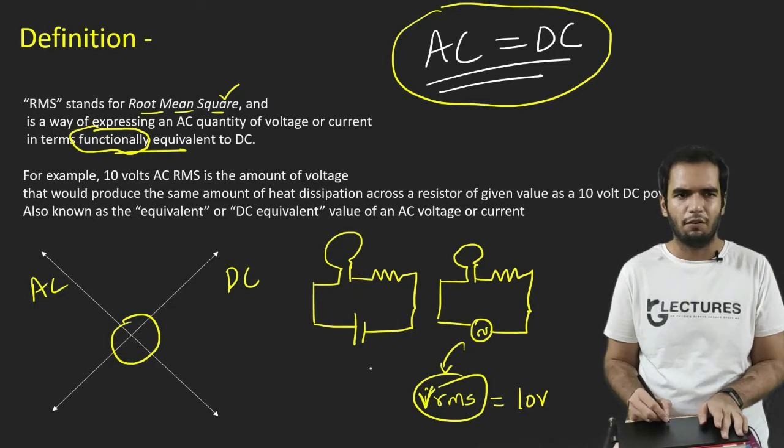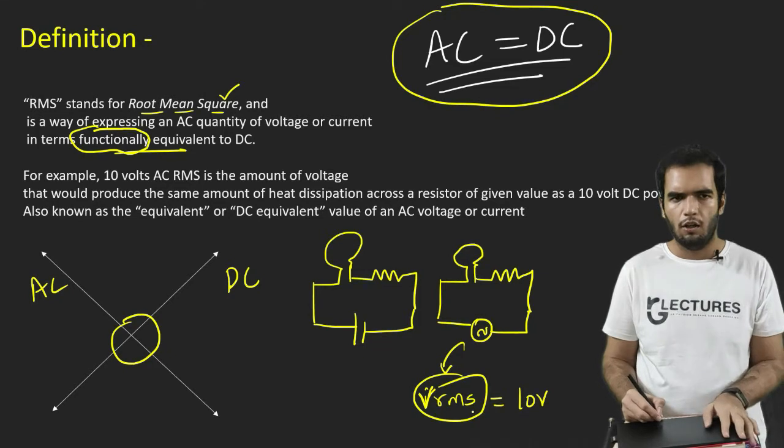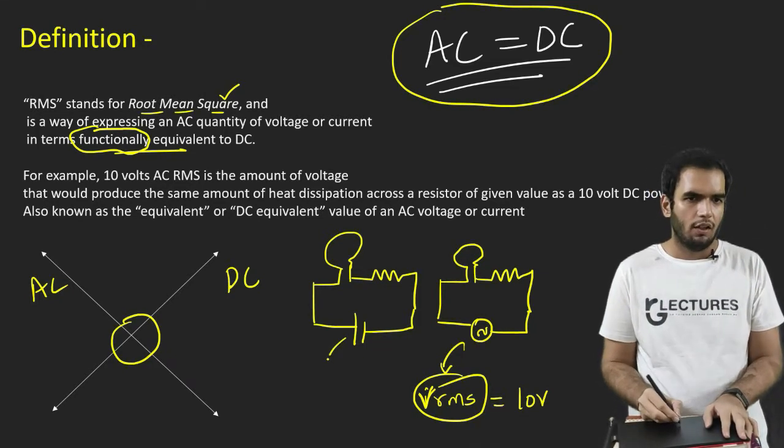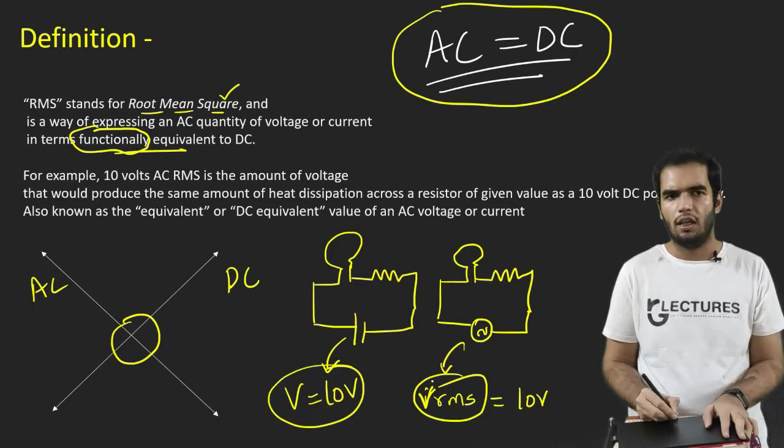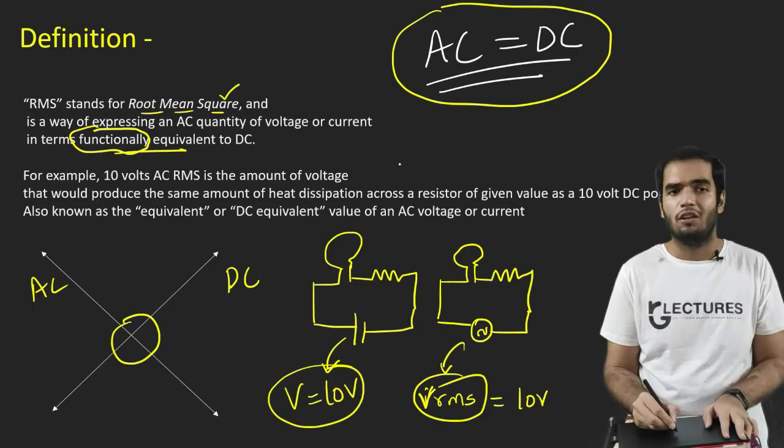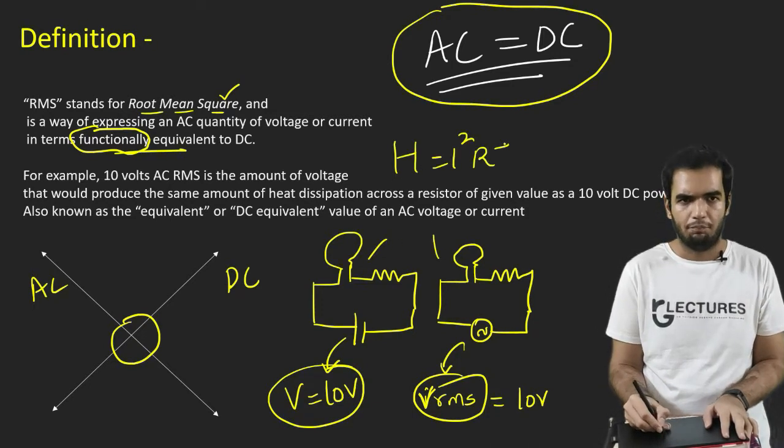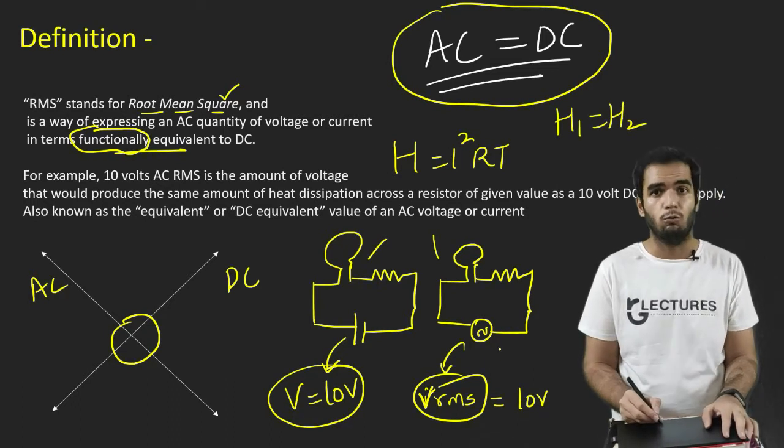So if I pass the I_RMS current through this circuit, I consider a value, I pass that I_RMS current through this circuit. Suppose that I_RMS current is say 10 volt and I_RMS current is 10 ampere. So let me consider the V first. Let us say I have applied a V_RMS voltage of 10 volt. And here I have applied the DC voltage of 10 volt.